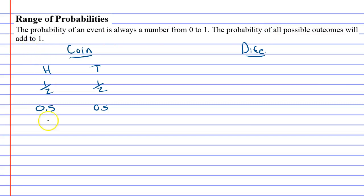For instance, if I take the probability of getting heads and add it to the probability of getting tails, it should equal 1. And it does, because 0.5 plus 0.5 equals 1.